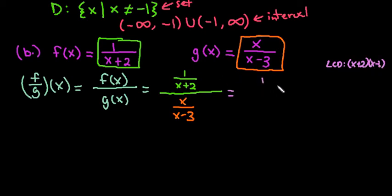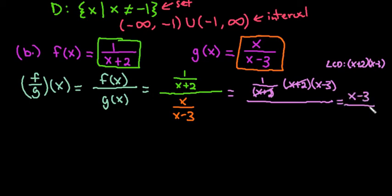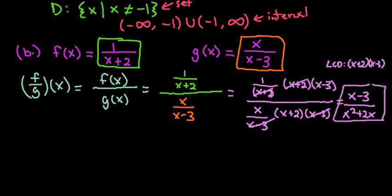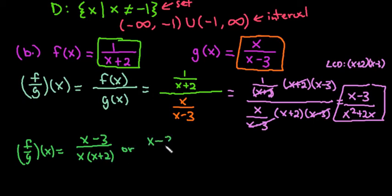If I multiply both the numerator and the denominator by that, I'm really multiplying by 1. But what happens is in the numerator, the x + 2 cancels out, so I'm just left with x - 3. And in the denominator, because I have x over x - 3, this time the x - 3 cancels, and I'm left with x times (x + 2), which you can either leave it like that or you can distribute. So you could write your answer as (x - 3) over x(x + 2), or you can distribute it in and say it's (x - 3) over x² + 2x.